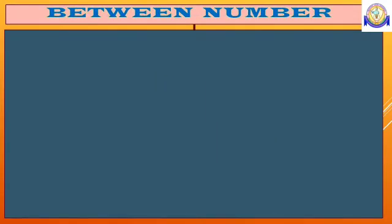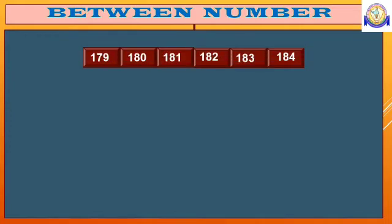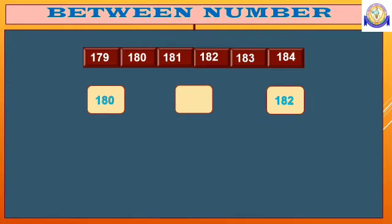Next comes between numbers. Here, I took few serial numbers to find out between numbers. First of all, let's check what comes between 180 and 182. Between 180 and 182 comes 181.